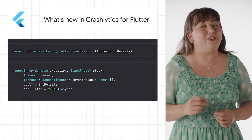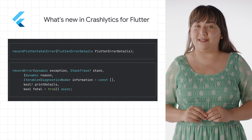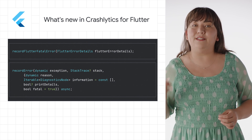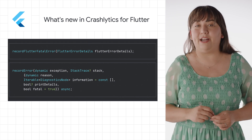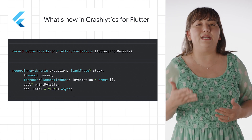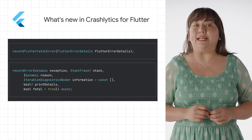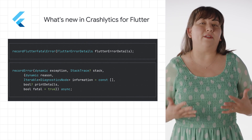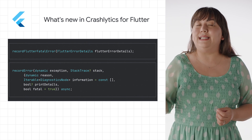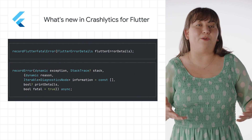The latest Crashlytics Flutter plugin introduces two new fatal APIs: a convenience API that plugs directly into the Flutter error.onError, and a more generic API that allows you to specify the error and set the trace. Both APIs report exceptions as fatal events, providing a way to distinguish between the priority of the issue in the same intuitive way as on native Android and iOS apps.